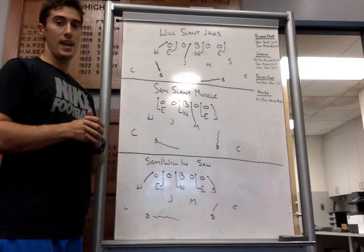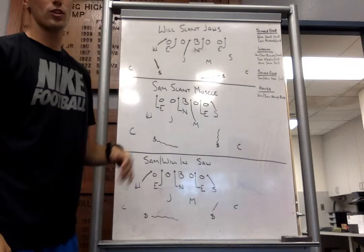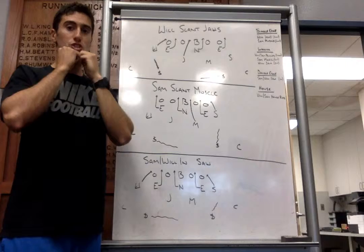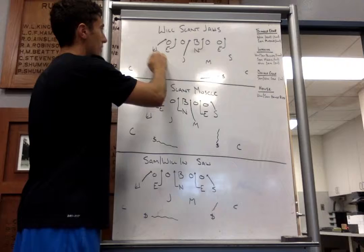The first blitzes we're going to go over are going to be our edge pressures. The first one is going to be a single-edge pressure. This will be Will, Slant, Jaw. Will, Slant, Jaw. So, Will, in our Will front, Will in a 6, 4-0-4, Sam and Ability, 9.